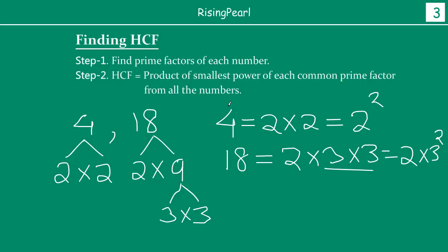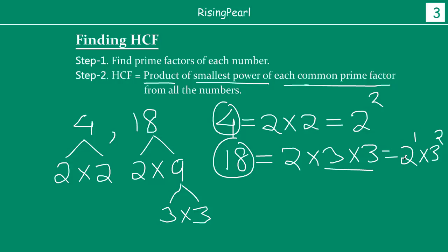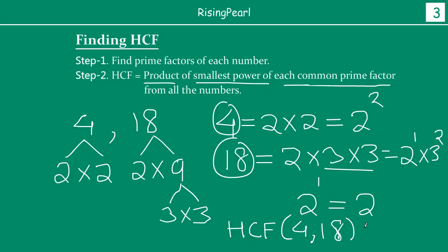So the HCF of 4 and 18 will be the product of the smallest power of each common prime factor. The only common prime factor is 2, because 4 does not have any factor of 3. In the case of 18, I have only one 2 as a factor, and in 4 I have two 2s. So the lowest power of 2 is 1, which is 2 to the power 1. So the HCF of 4 and 18 is equal to 2.